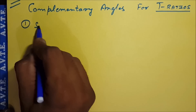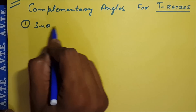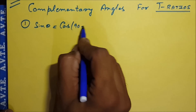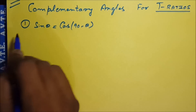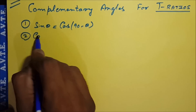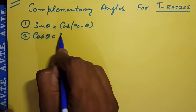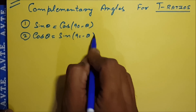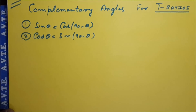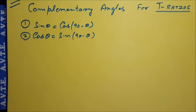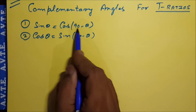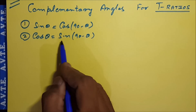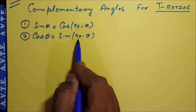There are six formulas. The first is sin theta is equal to cos(90 minus theta), and cos theta is equal to sin(90 minus theta).